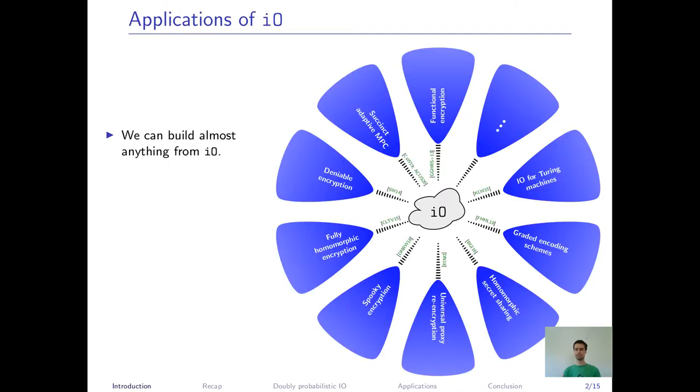I.O. is extremely powerful. We can build almost anything we can think of from I.O. plus some comparatively mild assumptions, such as one-way functions. Even applications like Deniable Encryption, which seem beyond our reach for a long time, are now possible with I.O.